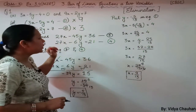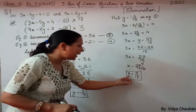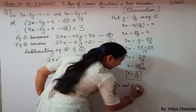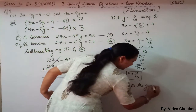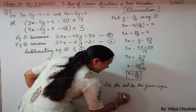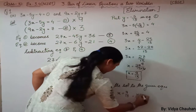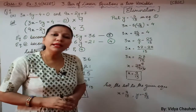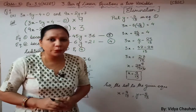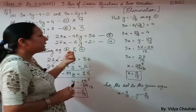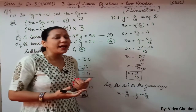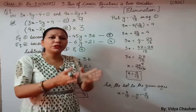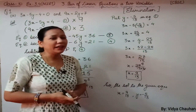Using the elimination method we have found the solution: x equals to 9 upon 13 and y equals to minus 5 upon 13. This is how we use the elimination method to solve a pair of linear equations. I personally feel that the elimination method is more convenient and easier compared to the substitution method, with a very low risk of mistakes if you calculate carefully. I hope this topic is clear to all of you. Thank you.